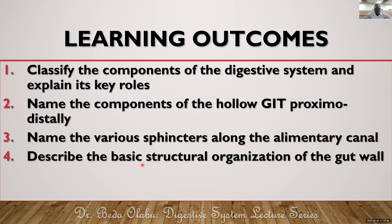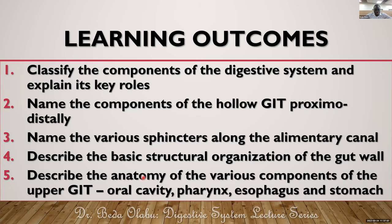We'll then focus on the anatomy of the upper GIT components: the oral cavity, pharynx, esophagus, and stomach. When discussing the upper GIT, some include the duodenum, but in this session we'll end at the level of the stomach, discussing the duodenum later together with the intestines.